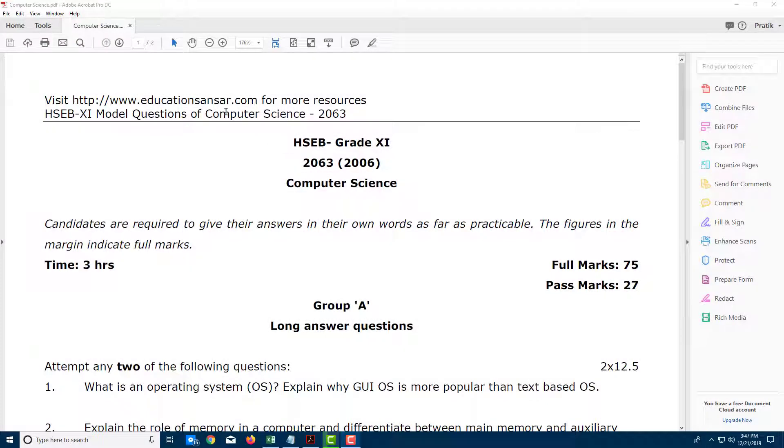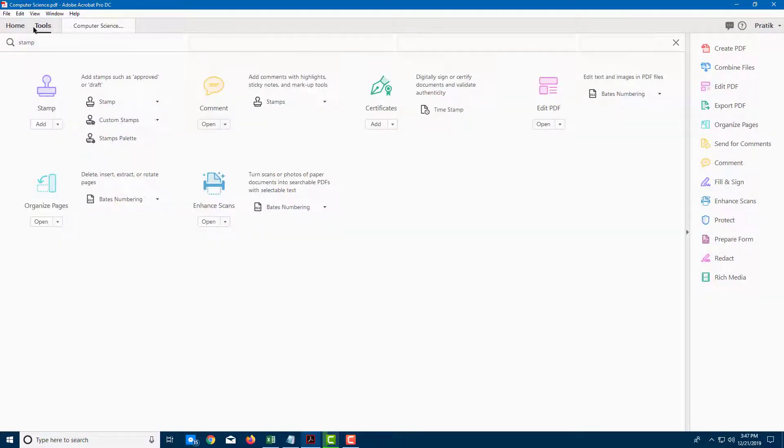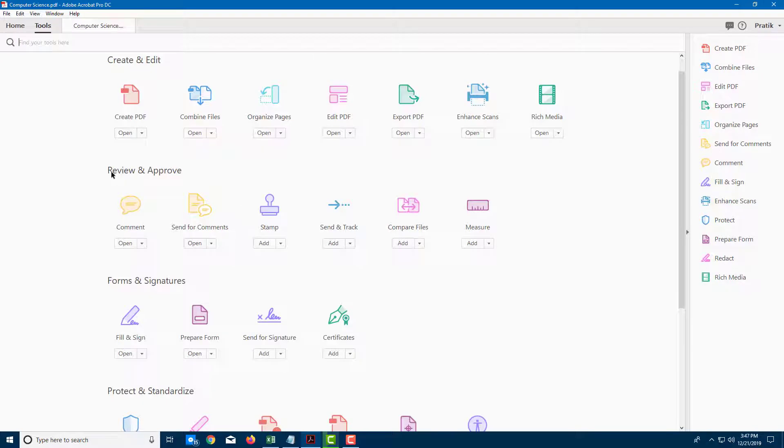In Adobe Acrobat Pro, you can use stamps to approve documents. To use the stamp tool, go into Tools, and you'll find Stamp in the Review and Approve section. You can add this onto your right-hand window.